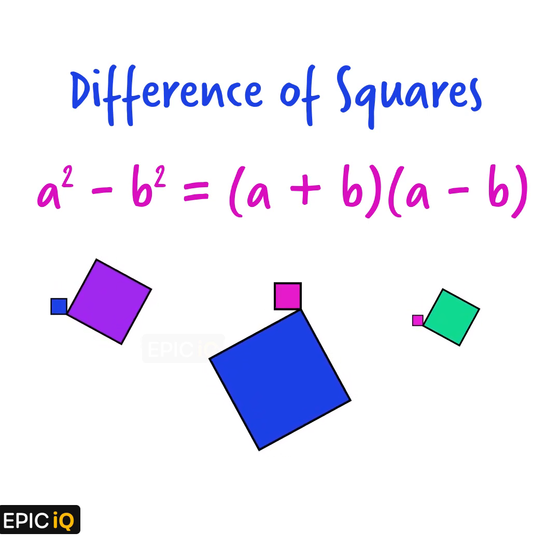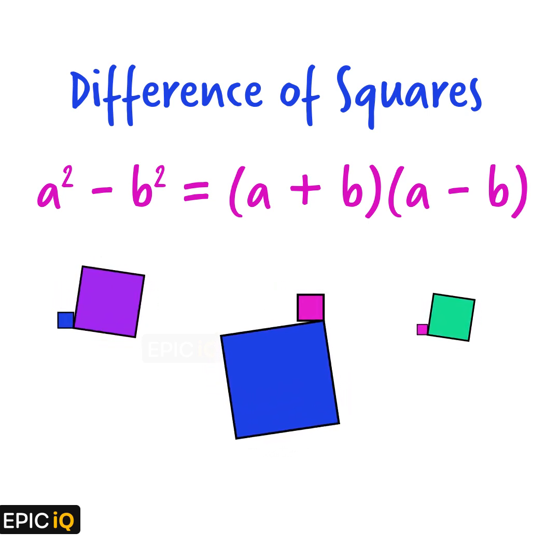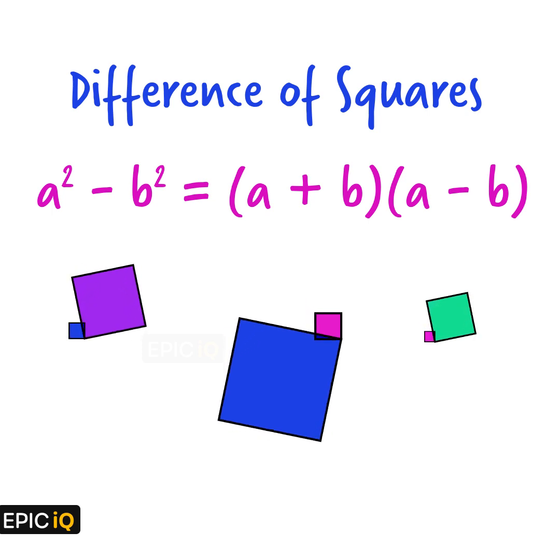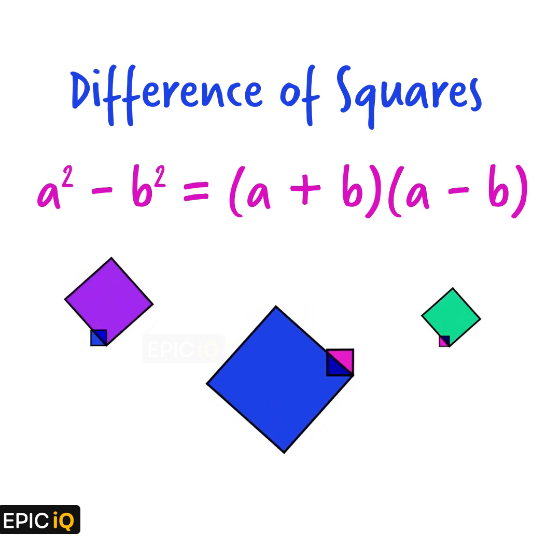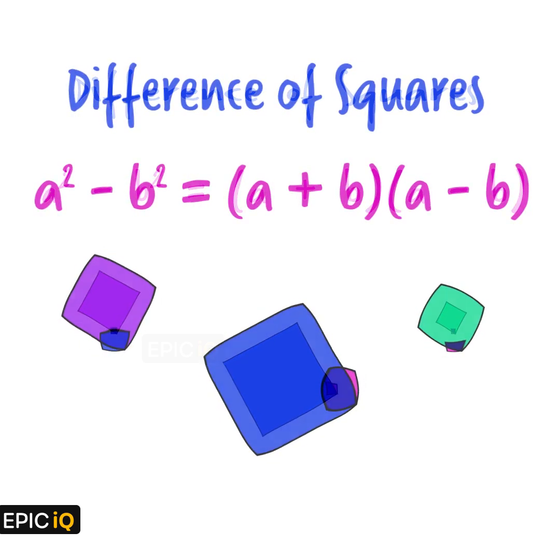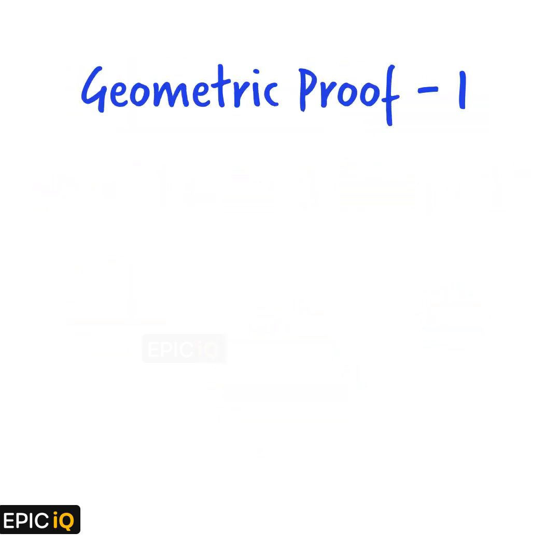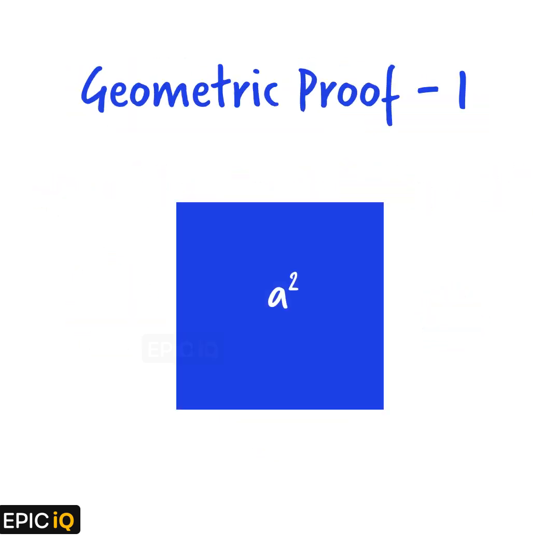The difference of two squares can also be illustrated geometrically, as the difference of two square areas in a plane. For the geometric proof, we start with a large square with side a, and its area will be a squared.